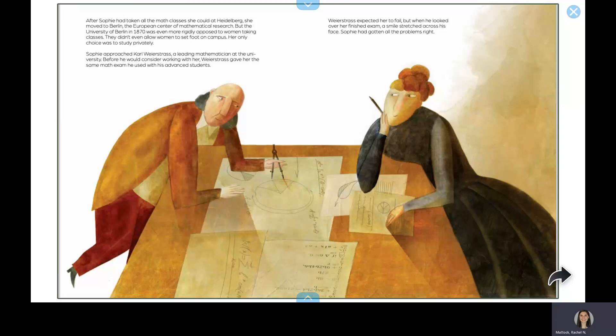After Sophie had taken all the math classes she could at Heidelberg, she moved to Berlin, the European Center of Mathematical Research. But the University of Berlin in 1870 was even more rigidly opposed to women taking classes. They didn't even allow women to set foot on campus. Her only choice was to study privately.